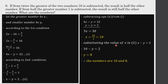So the value of x is 10. Substituting x equals 10 into equation 2 — which is x minus y equals 2 — we find y equals 8. That means the two numbers are 10 and 8. You can verify these values satisfy both original conditions.